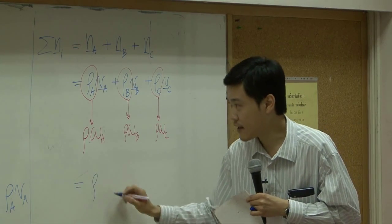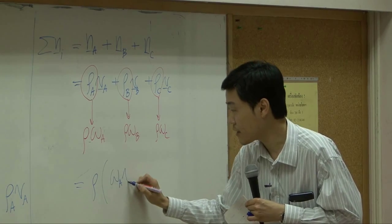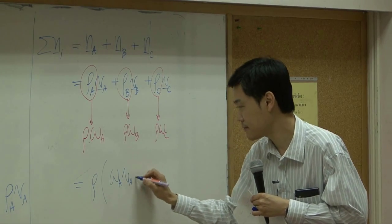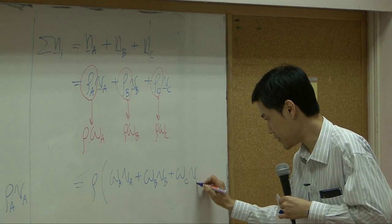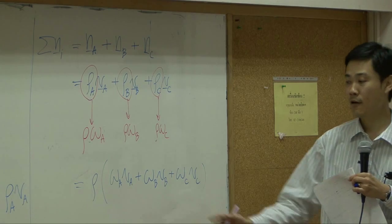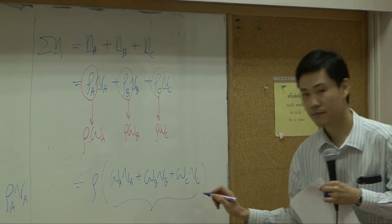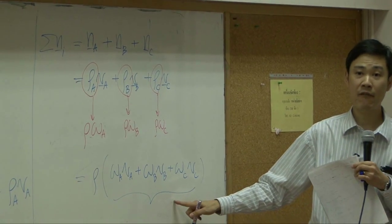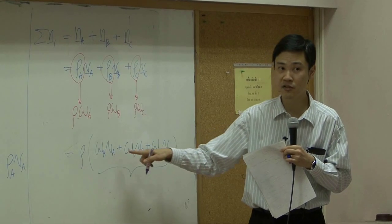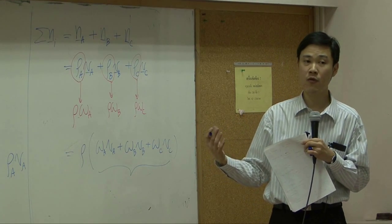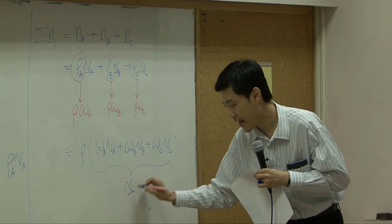So if I take it out, inside you have omega A, VA, plus omega B, VB, plus omega C, VC. What is this? This is the average velocity, right? You take velocity of each specie, weigh them according to its own mass fraction. That should give you average velocity, V.